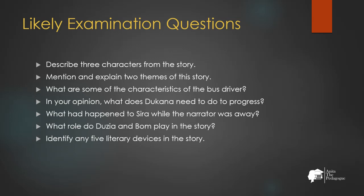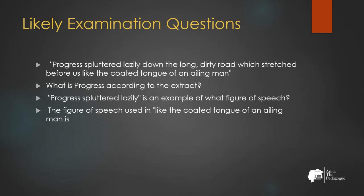Let's look at some likely examination questions: Describe three characters from the story. Mention and explain two themes of the story. What are some characteristics of the bus driver? In your opinion, what does Dukana need to be progressive? What had happened to Sira while the narrator was away? What role do Dusia and Boom play in the story? Identify any five literary devices in the story. 'Progress plotted lazily down the long dirty road which stretched before us like the coated thong of an alien man' — what is 'Progress' in this extract, and what figure of speech is used in 'like the coated thong of an alien man'?